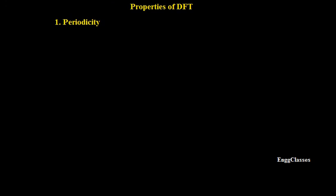Welcome to NGclasses YouTube channel. In this video we will consider the concept of properties of DFT. There are around 8 to 10 properties of DFT. We will consider the very first property which is periodicity. The DFT of any signal is represented as X of K, and we would like to prove that X of K is periodic.